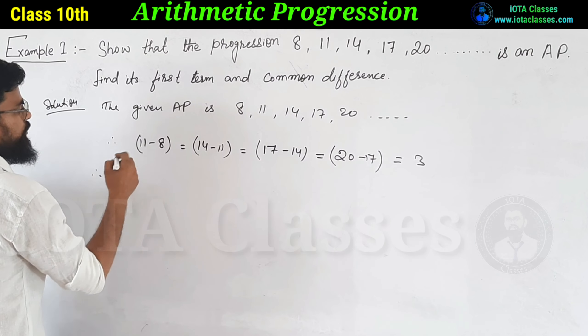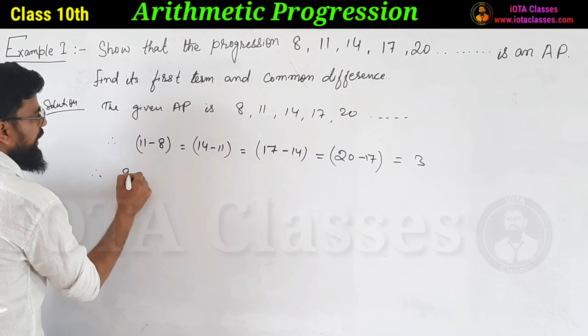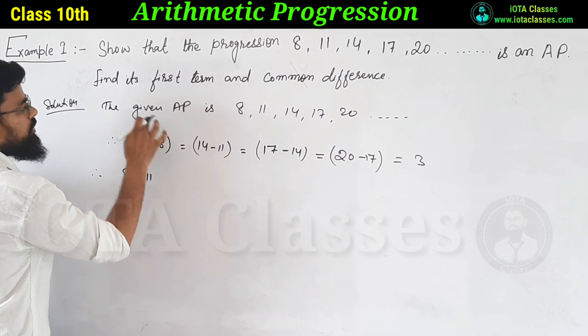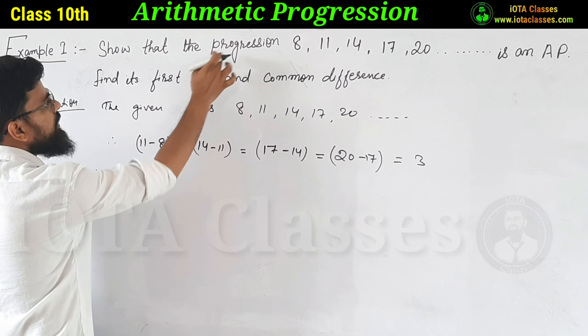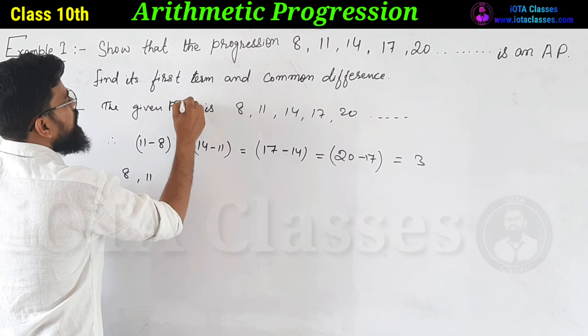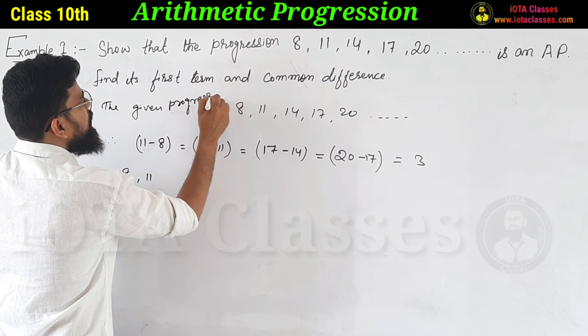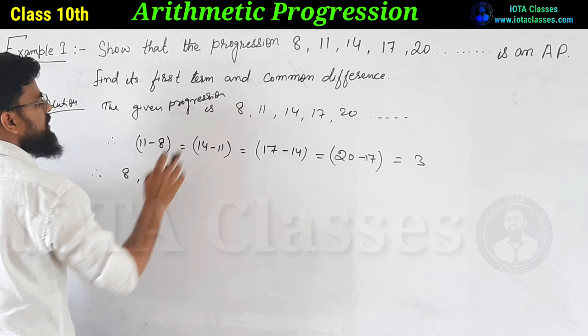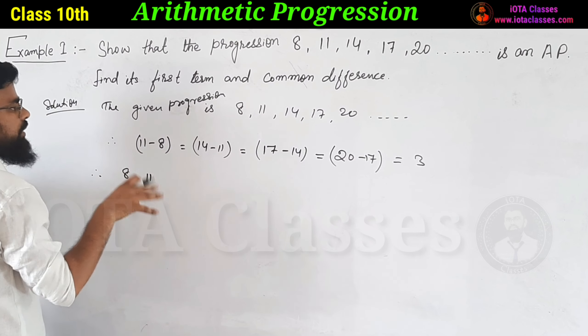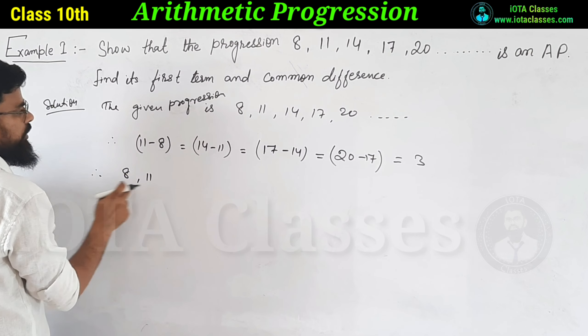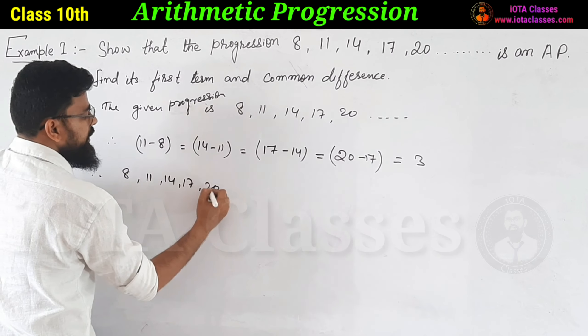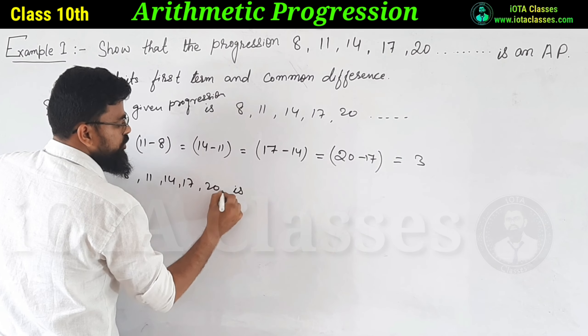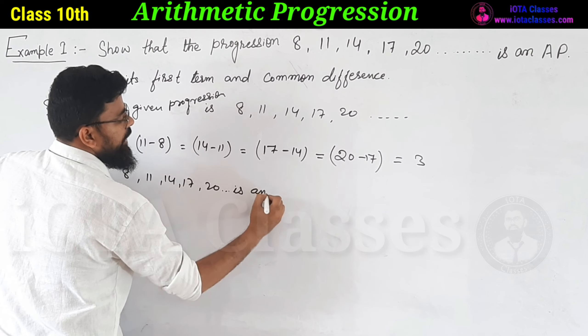Therefore, the given progression is a pure progression. Therefore 8, 11, 14, 17, 20 is an AP.